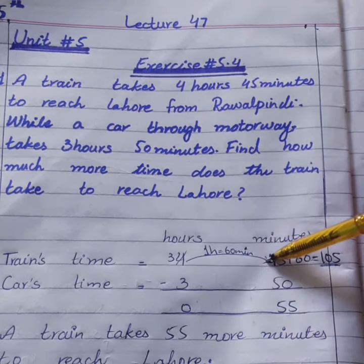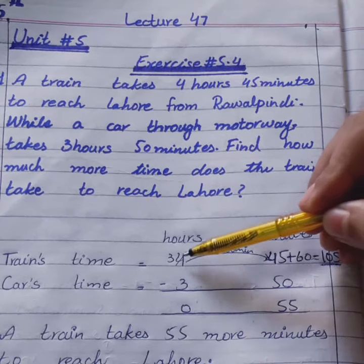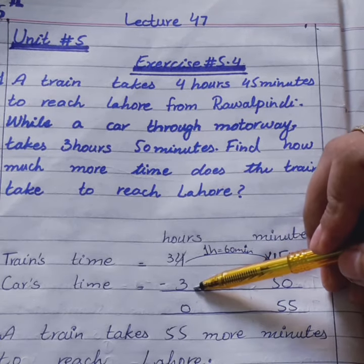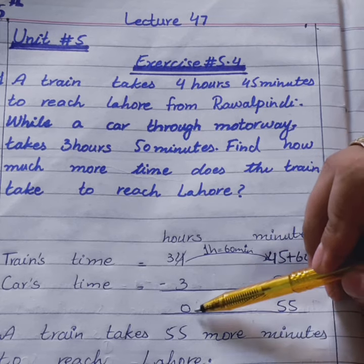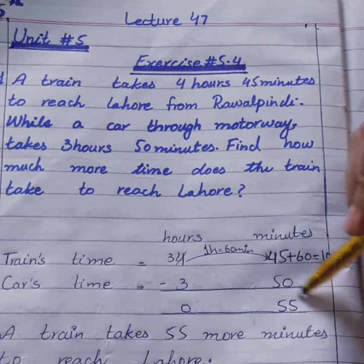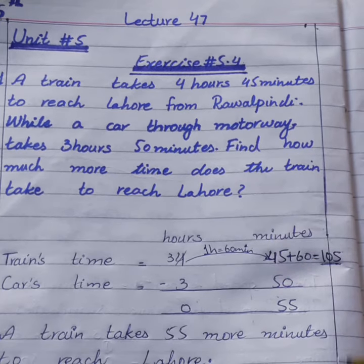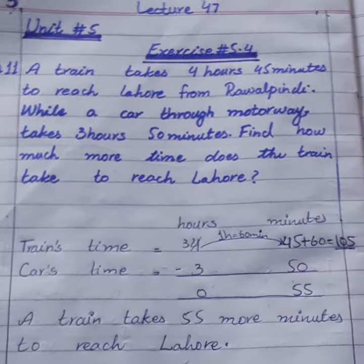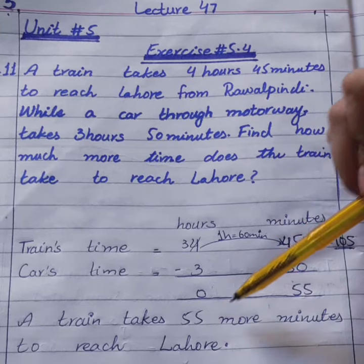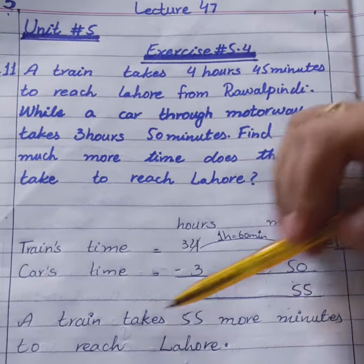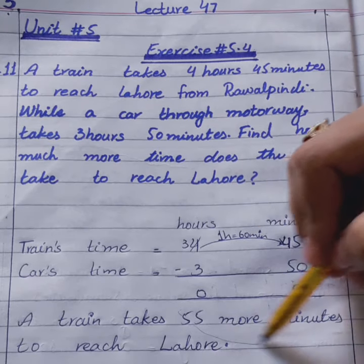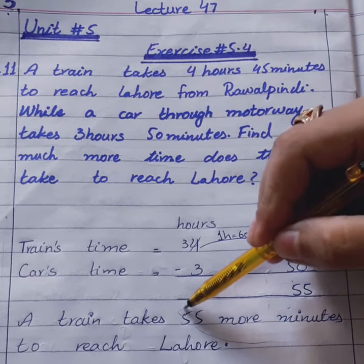We gave 1 hour as a borrow, so the hours become 3. From this 3, we minus 3, giving us 0 hours. So our answer is 55 minutes. The train takes 55 more minutes than the car to reach Lahore.